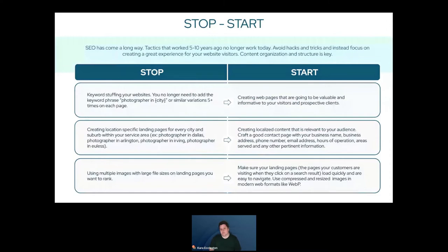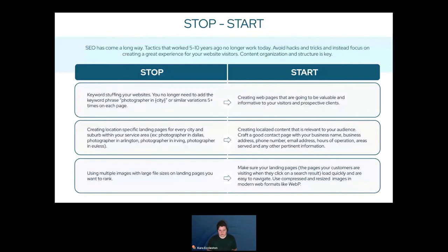Instead, start crafting a really good contact page that includes all your business information — that's where you can list all your service areas. In addition, start creating more localized content your target audience will find relevant. For example, if you're a wedding photographer in Dallas, you might write a blog post about the best wedding venues in Dallas, or the best places to take bluebonnet photos in Texas. Try to give a regional or local spin to your content to signal local relevance to Google.